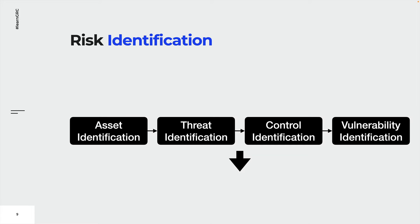Let's have a look at an example. Let's say an organization is located in Hawaii and runs a data center. A data center is definitely an asset — not only in the context of information security, but also in the context of financial assets. Data within the data center needs to be protected in terms of its confidentiality, integrity, and availability. Hawaii is located on an island with volcanic activity, so a volcano eruption is a considerable threat.